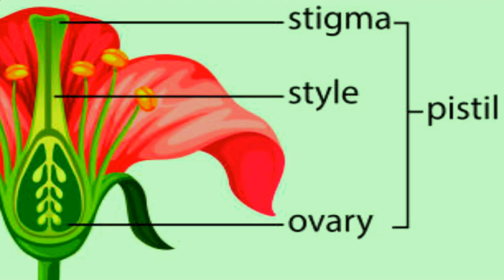This pistil has three main parts: stigma, style, and ovary. The stigma is the sticky tip where pollen lands. The style is the cylindrical tube that connects the stigma to the ovary.